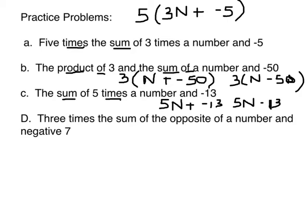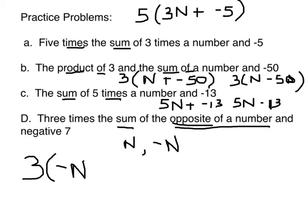Let's do d. D says three times the sum of the opposite of a number. A number would be n, the opposite of n is negative n. So when you say opposite that means negative. Three times the sum of, so I'm going to add something: the opposite of a number and negative seven. That's how I'm going to write that. Again, I could have put negative n plus negative seven, but it's going to come out to the same thing. Go to the next page.